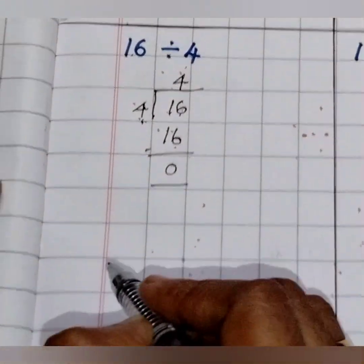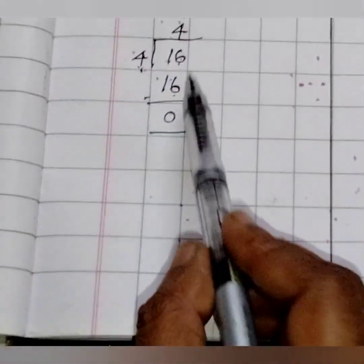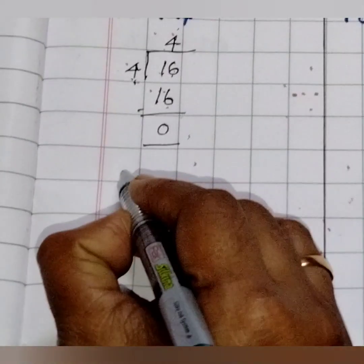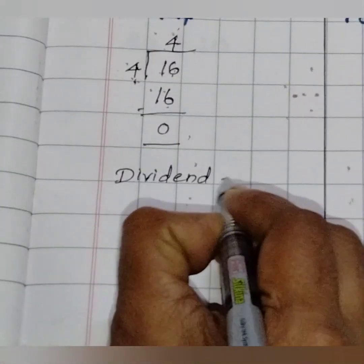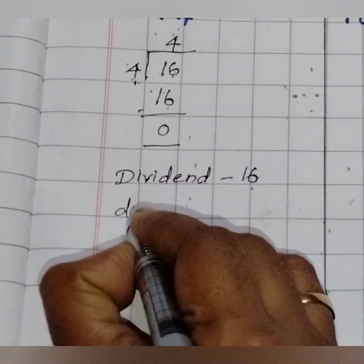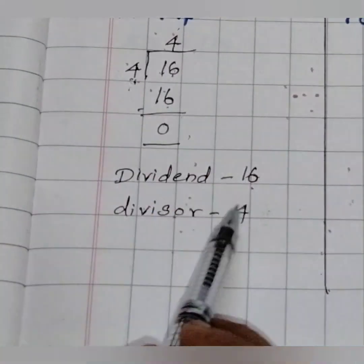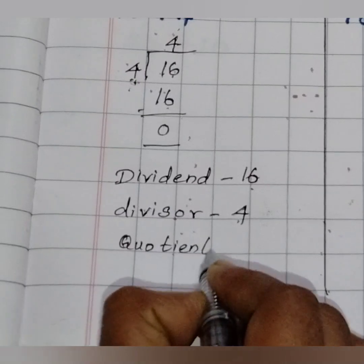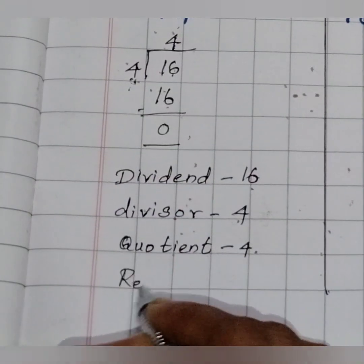The dividend is the big number — it is 16. Our divisor is 4, the quotient is also 4, and the remainder is 0.